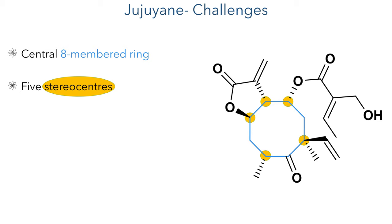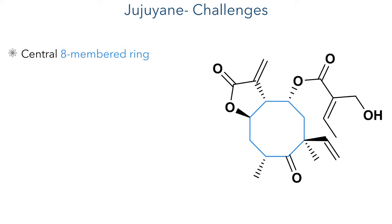This, coupled with its 5 stereocenters within this ring and the difficult trans-fused alpha-methylene lactone, makes this a challenging target for chemical synthesis. So let's look at the retrosynthetic strategy.